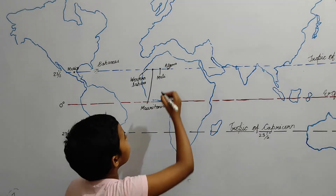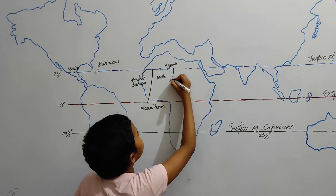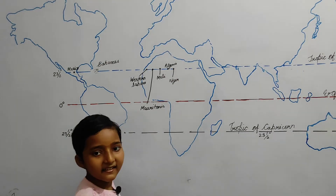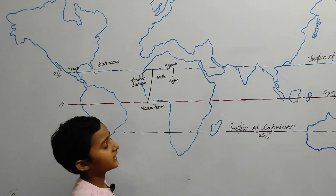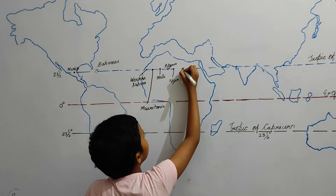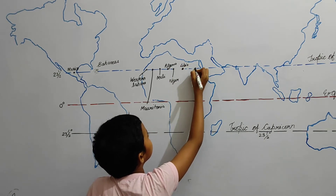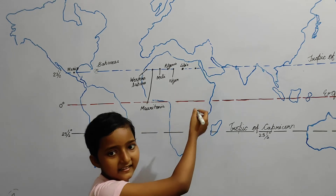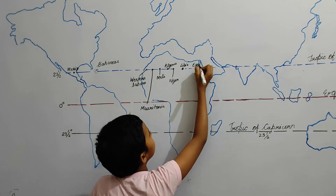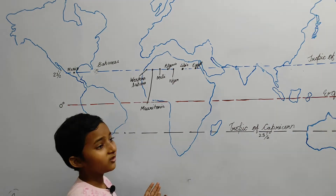There are two more countries in Africa on the Tropic of Cancer — they are Libya and the last one is Egypt. Now we have completed Africa and we are coming to Asia.